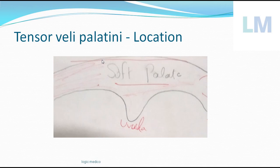Within the soft palate there is a fibrous framework called the palatine aponeurosis. Multiple muscles are attached to this framework and move the soft palate either upwards or downwards — elevation or depression — and can also tense or relax it. There is also a conical projection at the lower margin of the soft palate called the uvula.